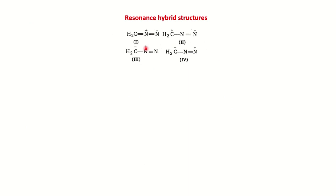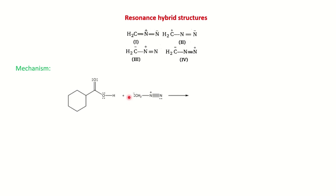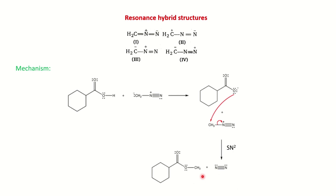Before seeing the mechanism, we will first look at the resonance structures. There are four possible resonance structures of diazomethane, and we will use structure 3 in our mechanism. For the acid-to-ester conversion: an acid-base reaction takes place where the proton is abstracted by the carbanion (CH2⁻). The acid exists as a salt with O⁻, and CH2⁻ takes the proton. Then through an SN2 mechanism, a backside attack takes place and nitrogen is released, forming the ester as the product.